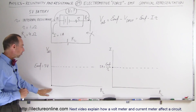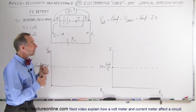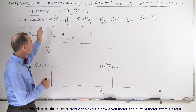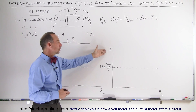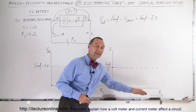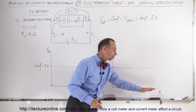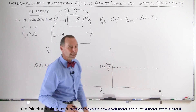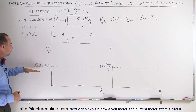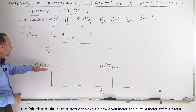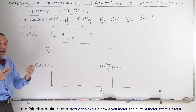We'll look at load resistor values from zero to a large value. We'll also look at the current in the circuit with respect to the load resistor, again from zero to a maximum value. Notice that the EMF is equal to 5 volts — that's the voltage that the battery provides.